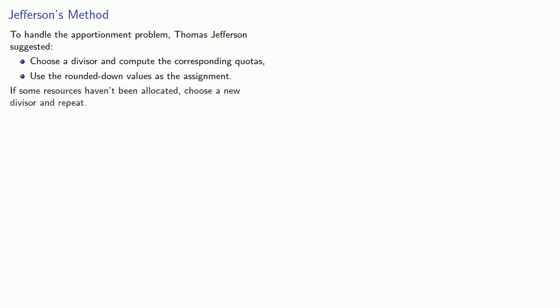To handle the apportionment problem, Thomas Jefferson suggested we choose a divisor and compute the corresponding quotas, and again use the rounded down values as the assignment. If some resources haven't been allocated, choose a new divisor and repeat.